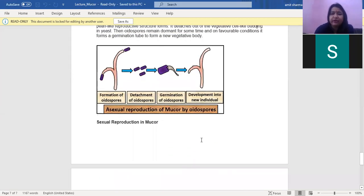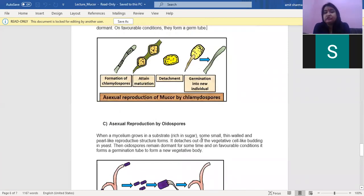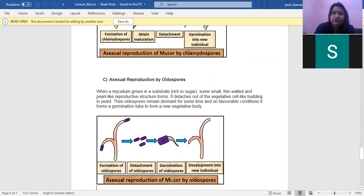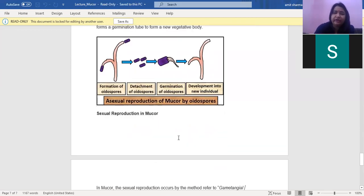The next is asexual reproduction by oidiospores. Unlike chlamydospores, oidiospores are thin-walled and are formed singly. They are formed just like budding in yeast. You can find a small pearl. They are even smaller in size than the chlamydospore. These pearls are released and on favorable condition, they form a germ tube and develop into a new individual. The oidiospores are formed at the tip, are detached, and germinate to form a new individual.